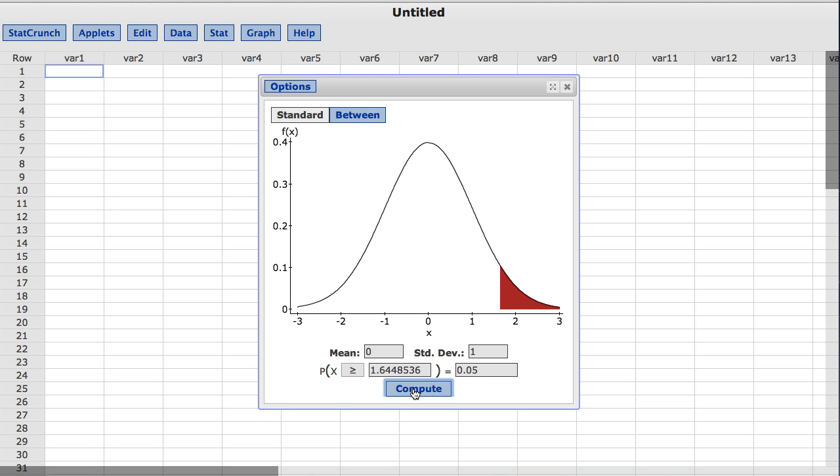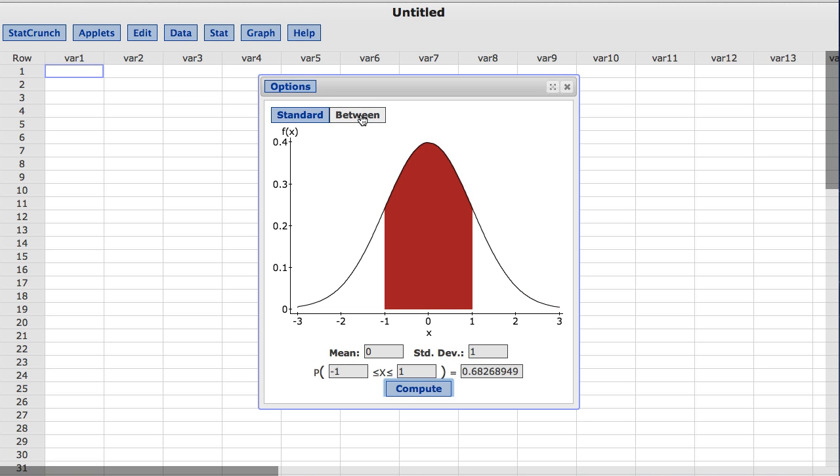To find the probability of falling between two reference values, I am now going to click the Between button at the top of the screen. By default, this produces a new graph with the area between the default reference values of negative 1 and 1 colored in red. The probability of falling between these two reference points is also shown to be approximately 0.68.